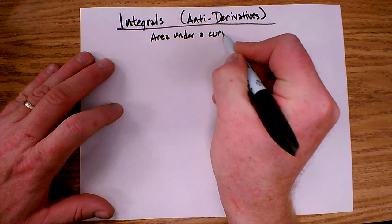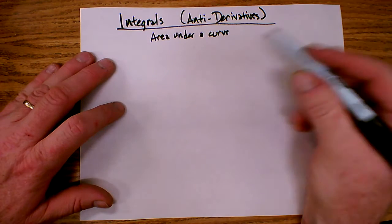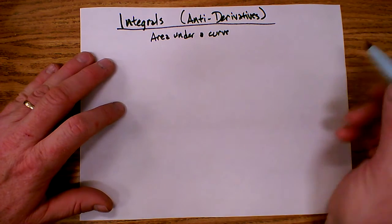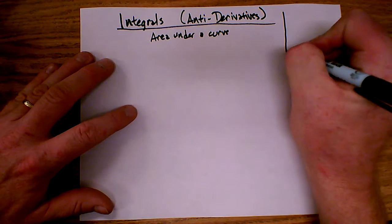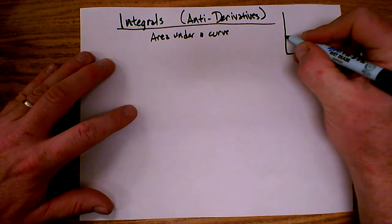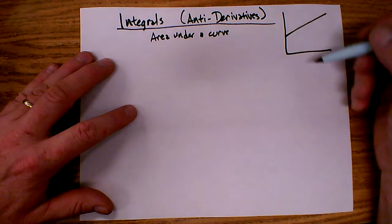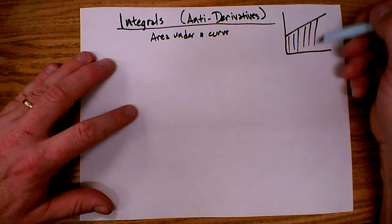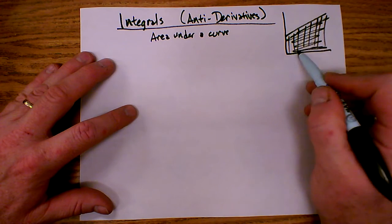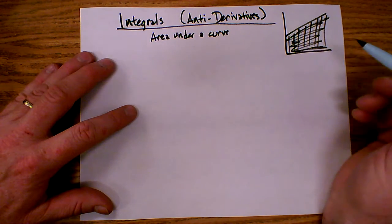Now curve, in the mathematical sense, doesn't necessarily mean a squiggly line. It just means whatever the function is being graphed. So for example, if I have a linear graph, the area under the curve represents this area right here from the function to the horizontal axis. That's the area under the curve.